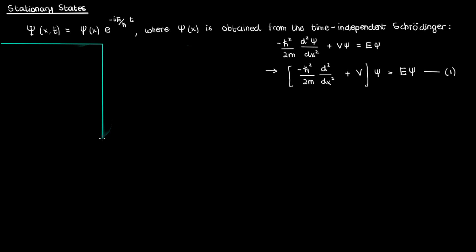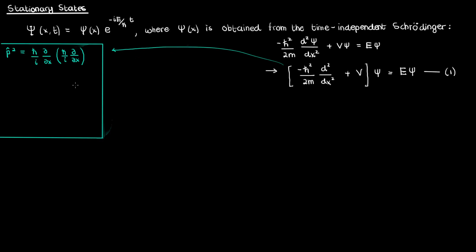Now why is this familiar looking? Well, it's because if you take the square of the momentum operator you'll get (h-bar over i) times the partial with respect to x, times (h-bar over i) times the partial with respect to x, which is negative h-bar squared times the second partial with respect to x, since i squared is negative 1. If you then divide that by 2m you'll get exactly the first term on the left of equation 1. This is obtained from calculating p squared over 2m in operator terms.